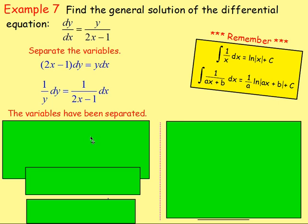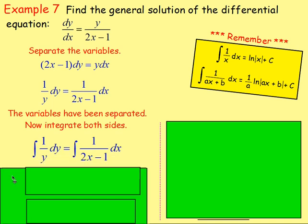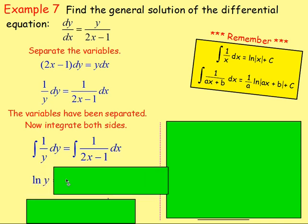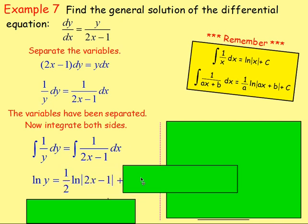From there, you will integrate both sides. So integrating 1 over y dy and integrating 1 over (2x minus 1) dx. 1 over y integrates to ln y. And if we integrate 1 over (2x minus 1), we get ln(2x minus 1). However, you need to divide by the derivative. If you differentiate 2x minus 1, you get 2. So really, using this rule, you'd have 1/2 ln(2x minus 1). And you've also got plus c.